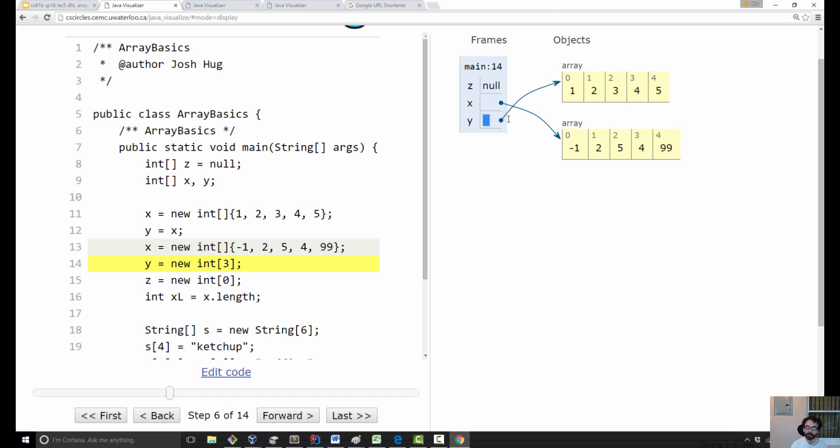Next we have y equals new int three. And so what that means is we're going to throw away these bits and replace them with the address of a new array of size three. So there's a couple of interesting things here. One of them is that the visualizer is going to make this disappear. Watch. So it's gone, right? And it kind of reorganizes for us.